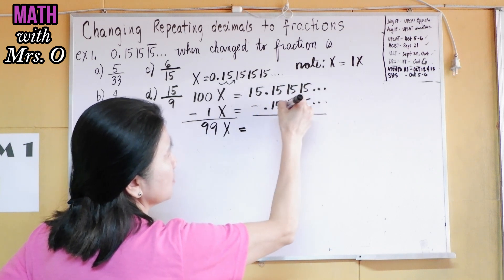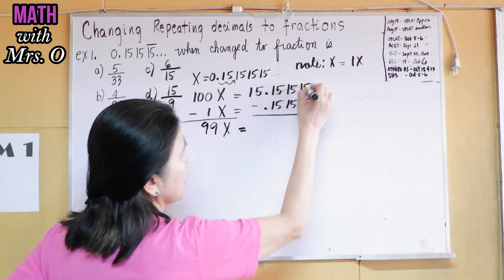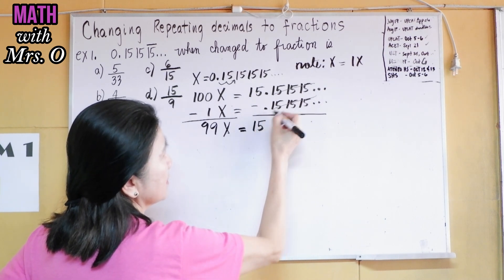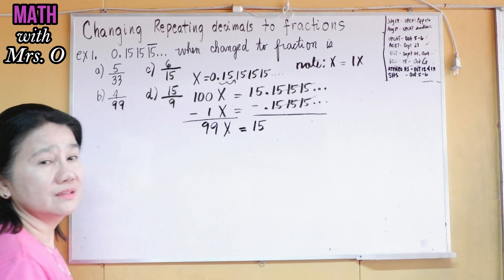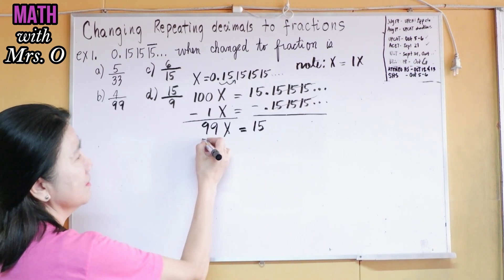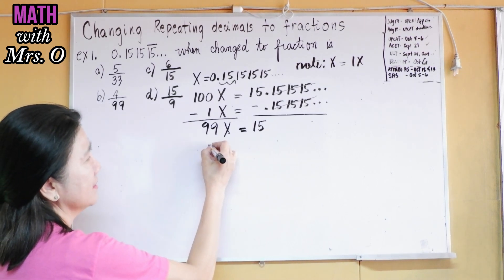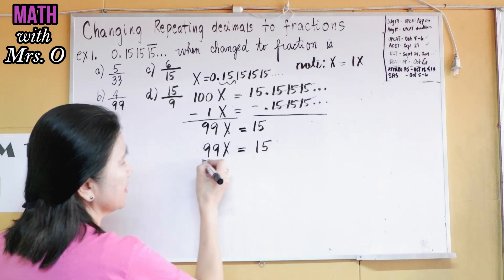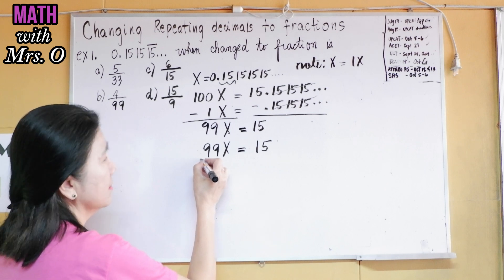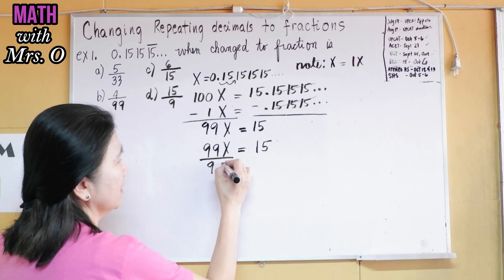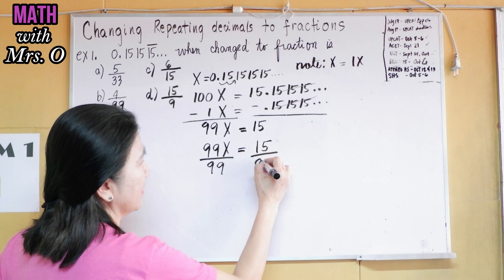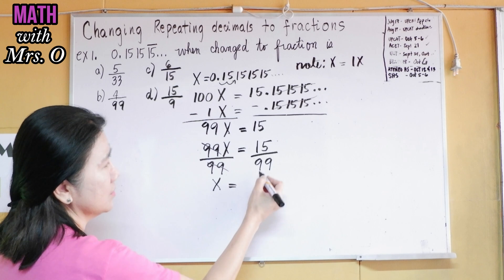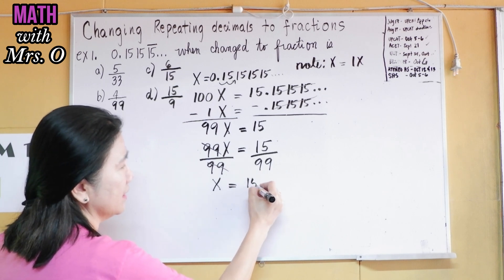So 99x is equal to 15.1515... minus 0.1515..., which is 15, because the decimals are now canceled. Then we isolate x by dividing by 99. Yes, you divide it by 99, and the 99 cancels. We get x is equal to 15 over 99.